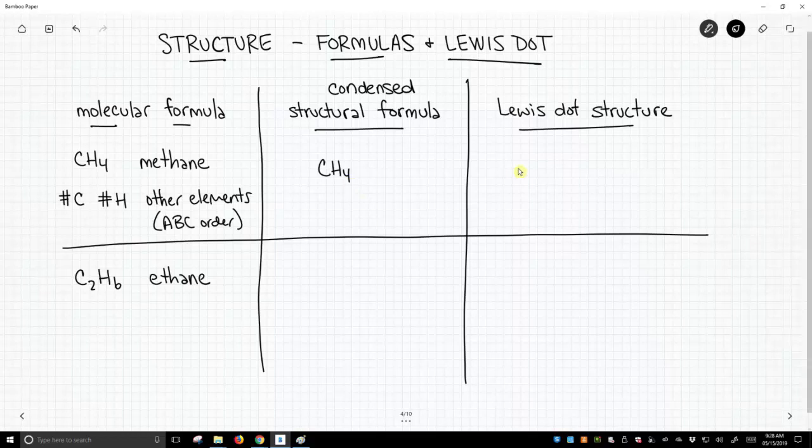The Lewis dot structure is meant to explicitly show connectivity of the atoms. For methane, we have a carbon in the middle, and it's an sp3 hybridized carbon. We have four bonds coming off of carbon to give it its octet rule, and those are all to a hydrogen. This is the Lewis structure.